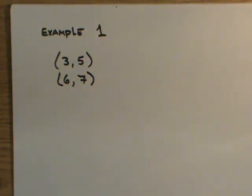So our first example of writing a slope intercept form equation, given two points, we're going to need to find delta y and delta x.